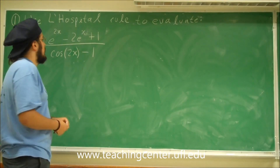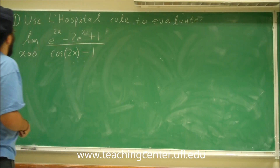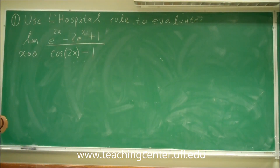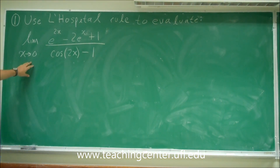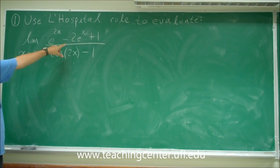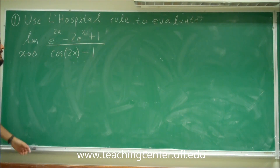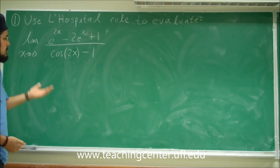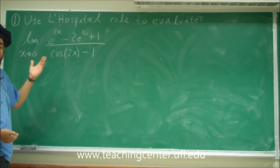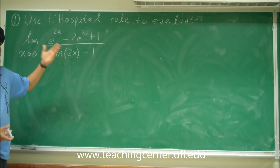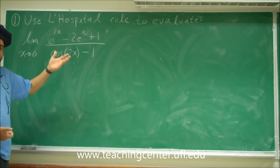In Exam 4, problem 1 states: use L'Hôpital's rule to evaluate the limit as x approaches 0 of this function — e to the 2x minus 2e to the x plus 1, all divided by cosine 2x minus 1. Now recall, in order to use L'Hôpital's rule, we must get an indeterminate form of infinity over infinity, or 0 divided by 0.